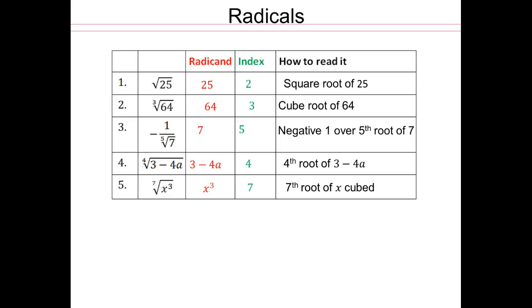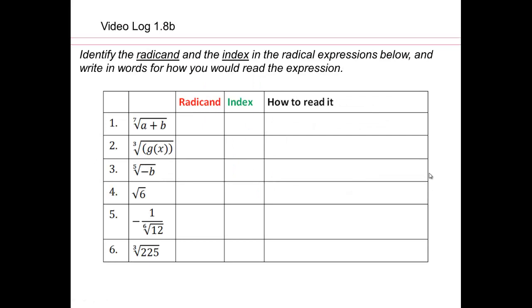Now, if you notice, we threw in 1 over fifth root of 7, and this negative doesn't have anything to do with the exponent. Remember, nope. The negative is going to follow through if you were to evaluate it. 7 is the radicand, 5 is the root. So you have negative 1 over fifth root of 7, that's how you would read this. 4th root of 3 minus 4a, 7th root of x cubed. So that's how you read all these. All right, so this is your homework.